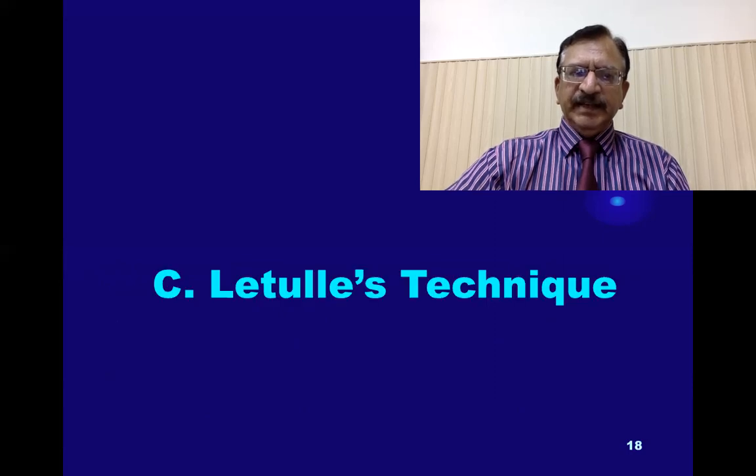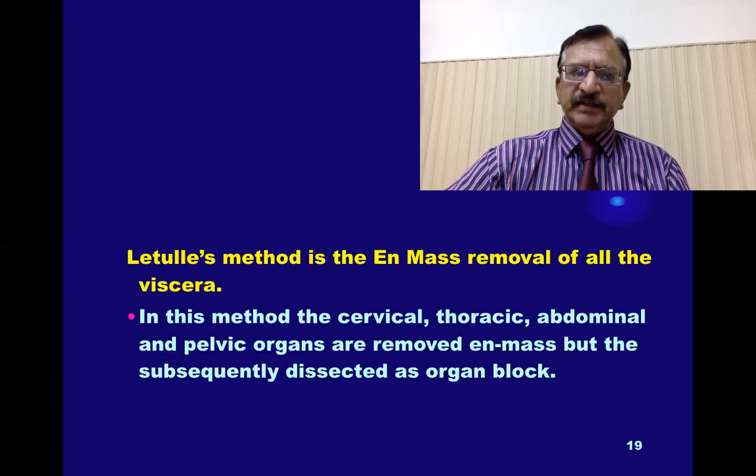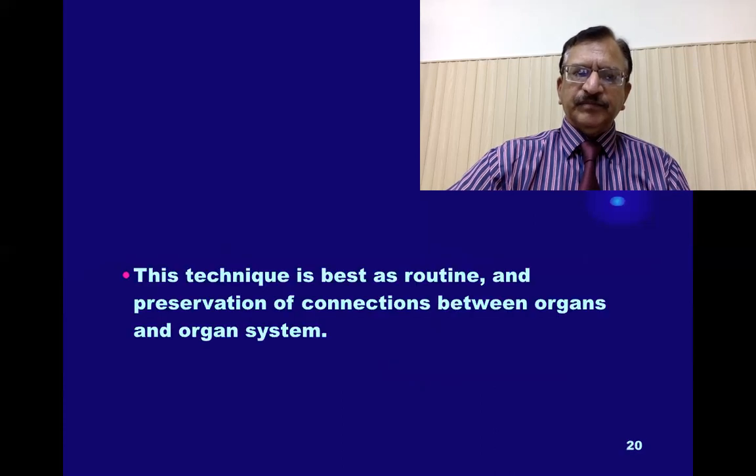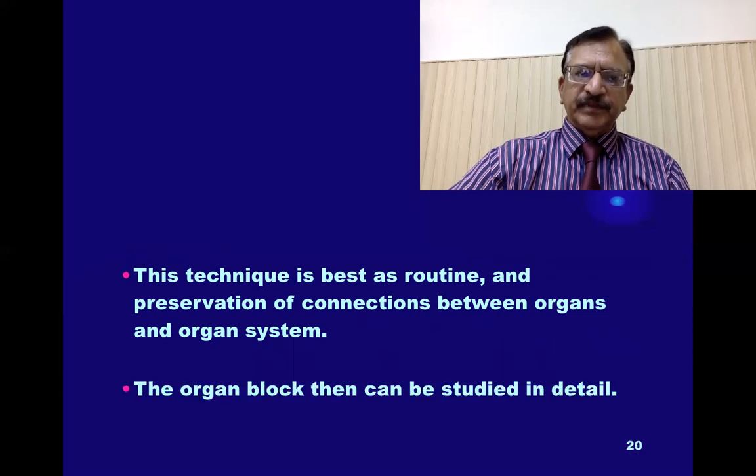Letulle's method is en-mass removal of all the viscera. In this method the cervical, thoracic, abdominal and pelvic organs are removed en-mass, but subsequently dissected as organ block. This technique is best as routine and preservation of connection between the organs and organ systems. The organ block then can be studied in detail.